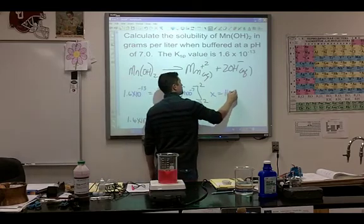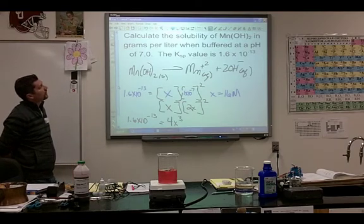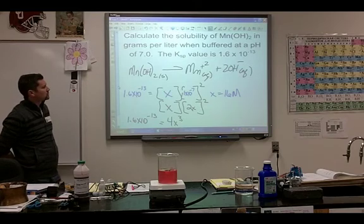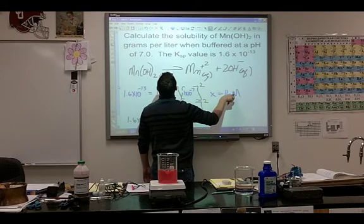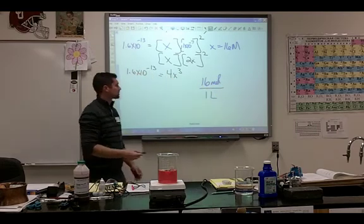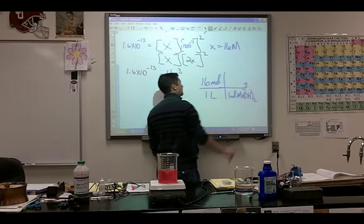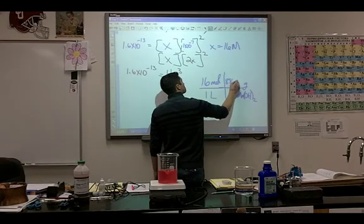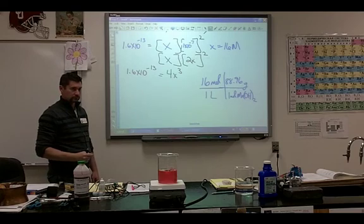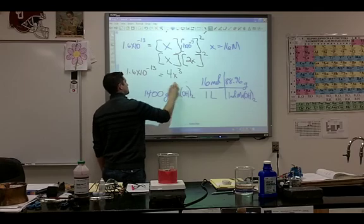So this right here is 16 moment. But that's not the answer. They asked, calculate the solubility of MnOH2 in grams per liter when buffered at a pH of 7. They want it in grams per liter. This is what? Moles per liter. Okay? Isn't that the same thing as 16 moles per one liter? So just convert this to grams. One mole of MnOH2 weighs how many grams? Somebody do that. Multiply that by 16. 1.6 times 1,400 grams of MnOH2. All right. Now some of you guys...